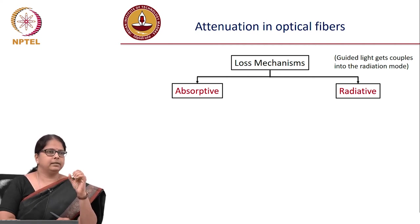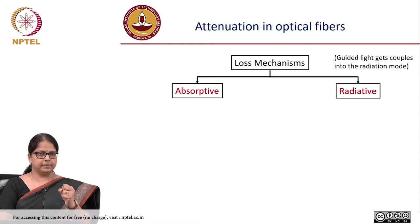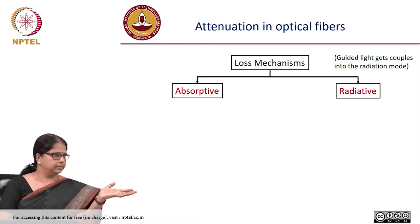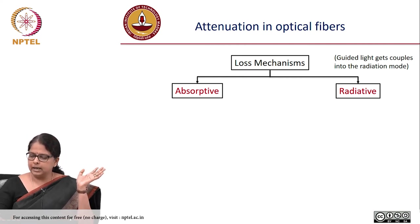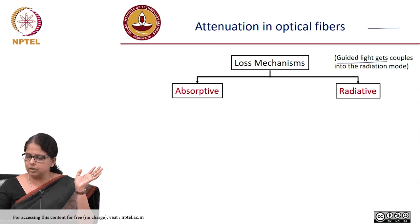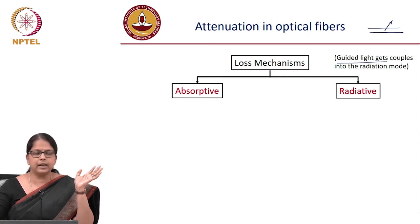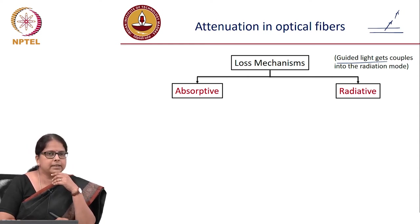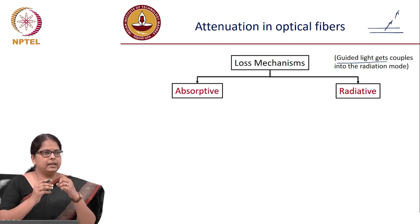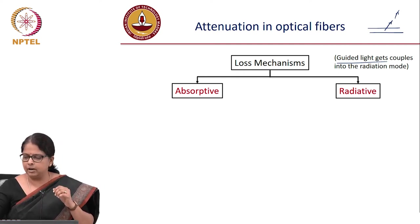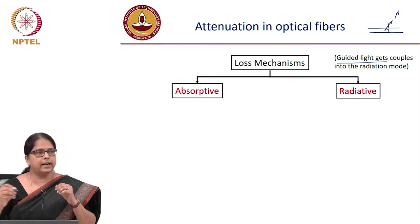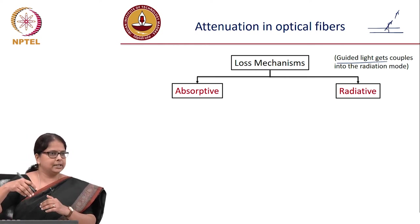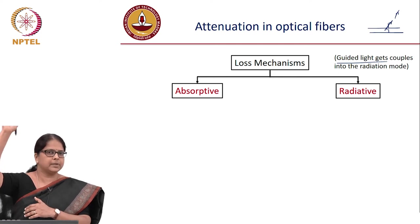Absorptive loss is where the energy gets absorbed by the material and is not available for use. Radiative loss is where the guided light in the core gets coupled into the cladding and escapes as a radiation mode. This is analogous to having an angle of incidence at the core-cladding interface less than the critical angle, causing light to escape into the cladding and out.